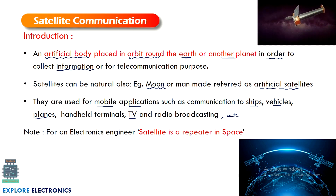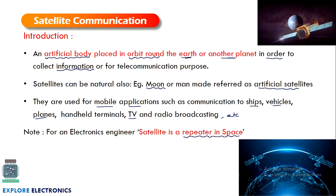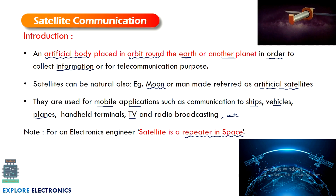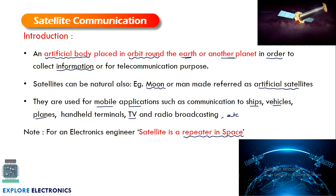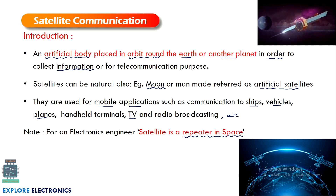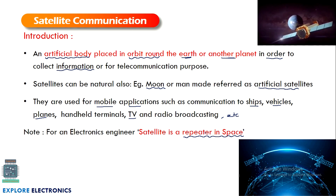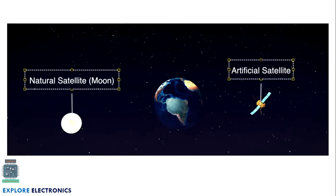For an electronic engineer, a satellite is simply a repeater placed in space. That satellite performs the operation of a repeater — it captures data from one point and transmits it to another point. That's why it acts as a repeater. The moon is a natural satellite and artificial satellites look similar in function.